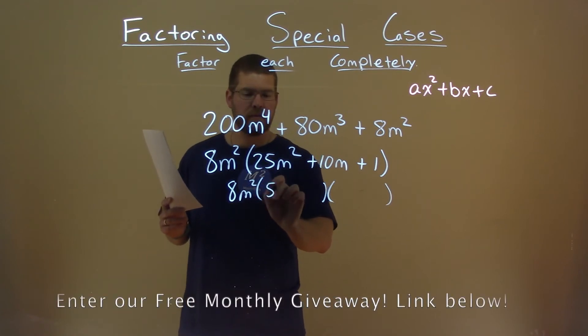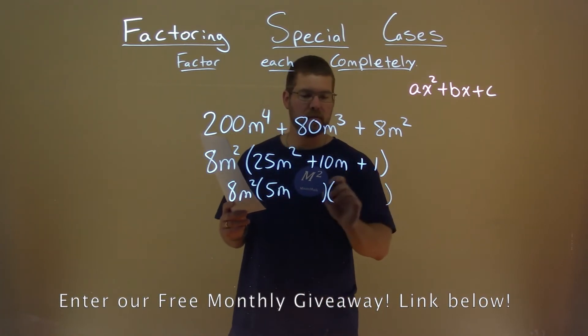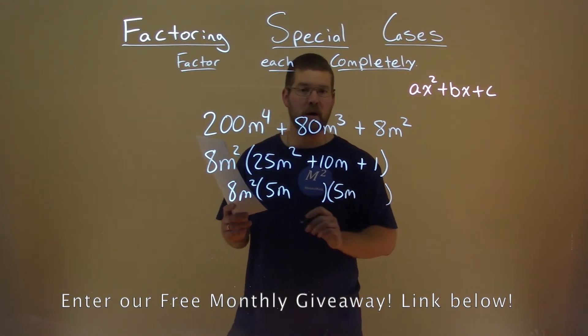Square root of 25 is 5, square root of m squared is m. Square root of 1, oh, it's right here, sorry, 5m here. Square root of 1 is 1.